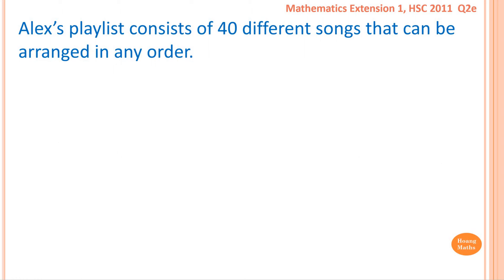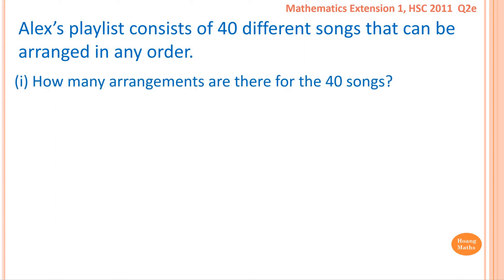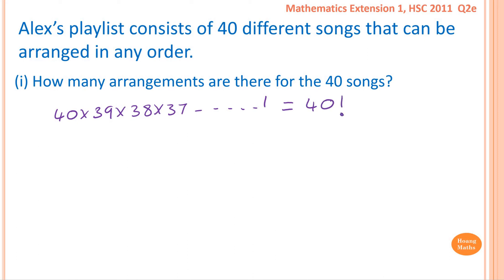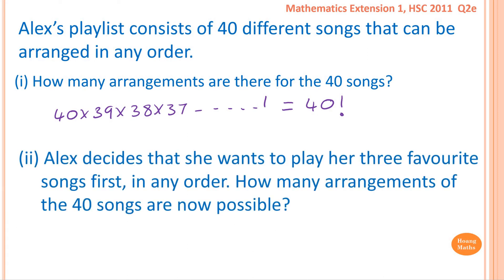Alex's playlist consists of 40 different songs that can be arranged in any order. How many arrangements are there for 40 songs? We have 40 songs to choose from for the first slot, then 39, then 38, then 37, all the way down to one. So the answer is 40 factorial. If I put this in a calculator, the number is too big, so I'll just leave it in factorial form.